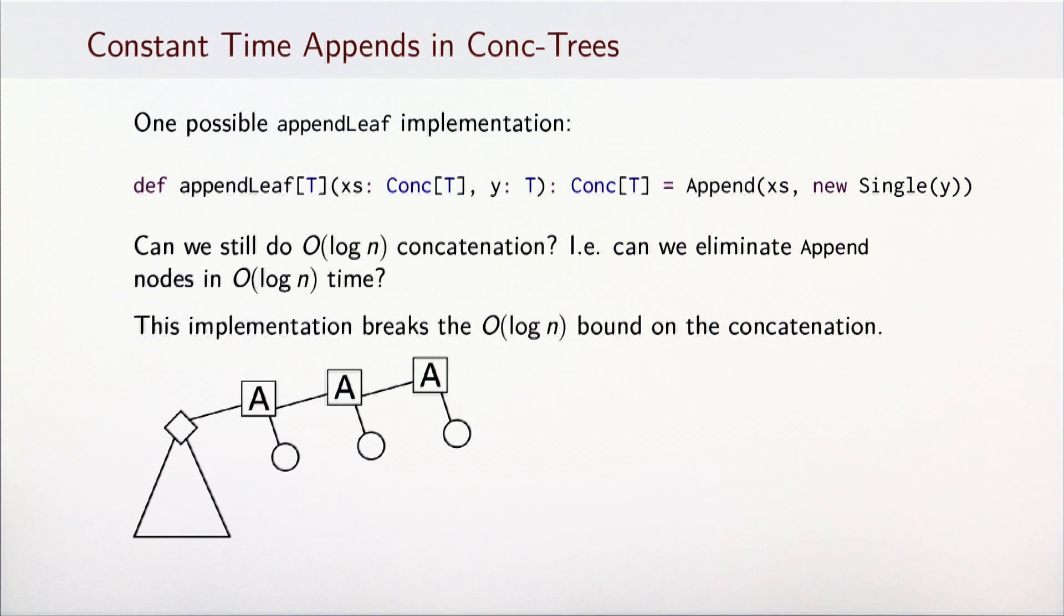After we add n elements to the tree this way, we will have n Append nodes in total. Therefore, we would have to traverse and process all those nodes to eliminate them from the tree and once again establish the balance invariance. The conversion to a normal conc-tree would have to take at least O(n) steps. The fundamental problem here is that we are essentially still building a linked list with Append nodes. So we need to link these nodes more intelligently.